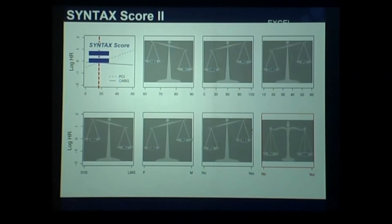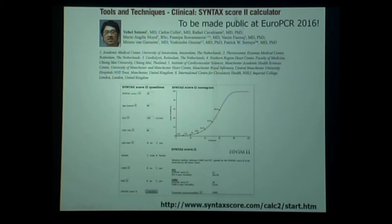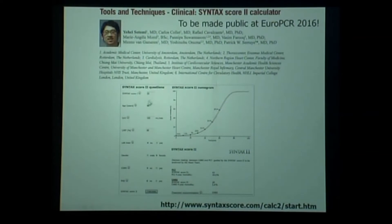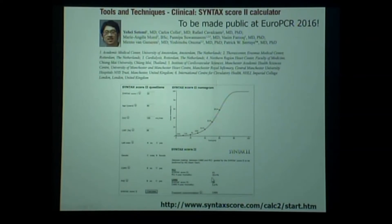It was a long explanation of one slide, but it is very important because two to three weeks ago we made public the calculator of the Syntax score. You can go to www.syntaxscore.com. You put in the anatomic Syntax score — for example 22 — HCT, creatinine 120, ejection fraction 30, left main, female, COPD, and peripheral vascular disease. And you see that the Syntax score for PCI gives a mortality of about 15%, while the mortality for CABG is 2.6%. So the calculator will advise in that patient to go to surgery.